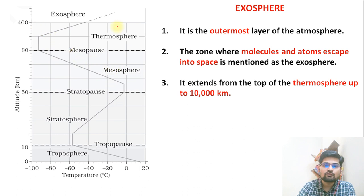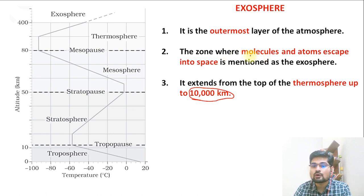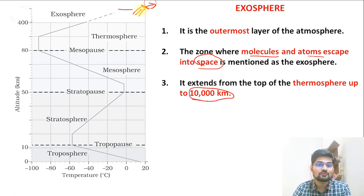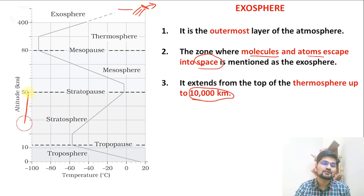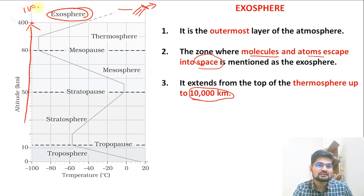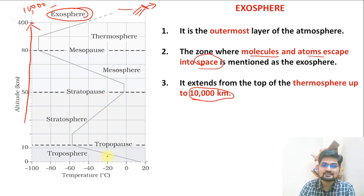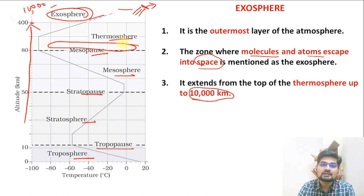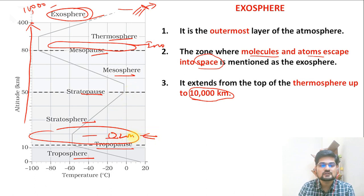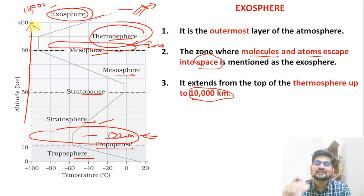The exosphere is the last layer, extending from 400 kilometers to almost 10,000 kilometers above Earth's surface. It is where molecules and atoms tend to escape into space, and it connects the atmosphere to outer space. To summarize the structure: troposphere, tropopause, stratosphere, stratopause, mesosphere, mesopause, thermosphere, then exosphere — with the ozonosphere found in the stratosphere and the ionosphere found in the thermosphere.